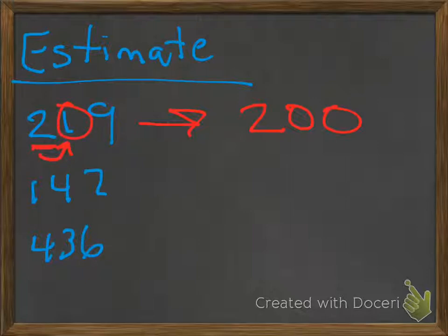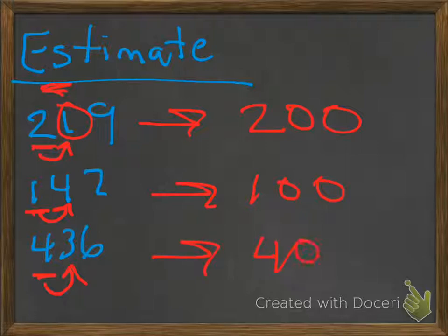Because really 1 in the tens place is closer to 200. If we look at this number, 142, we're going to round to the hundreds place again. Check out the 4, and the 4 brings us right back down to 100 because it's closer. And then 436, rounding to the hundreds place, looking at the 3, and once again, we're closer to the 400. We round down.